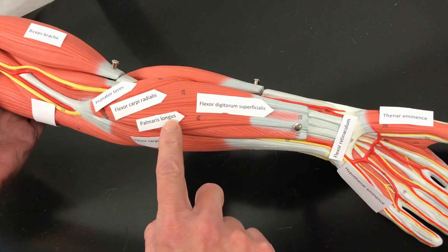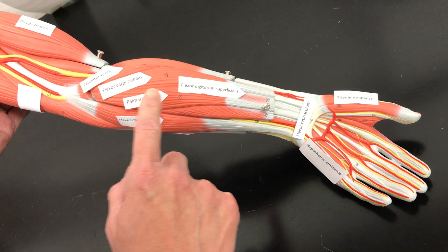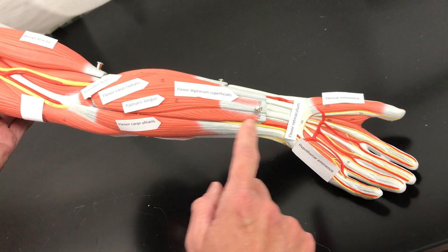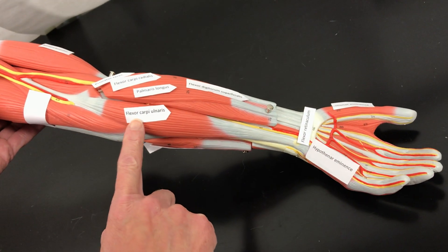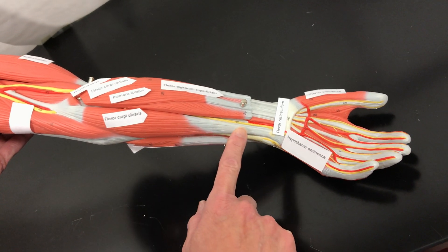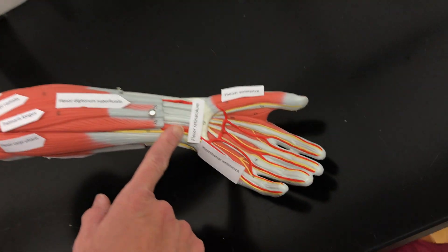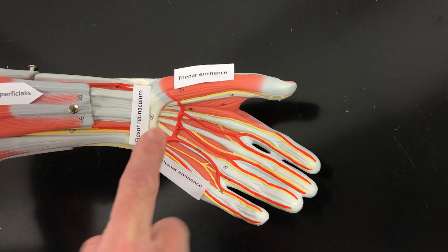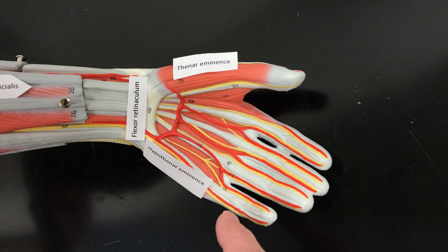This is the palmaris longus, a long muscle that goes to the palm. And then we have the flexor carpi ulnaris, it's on the ulna side. Then we have the flexor retinaculum, the band of tissue that holds down the tendons.